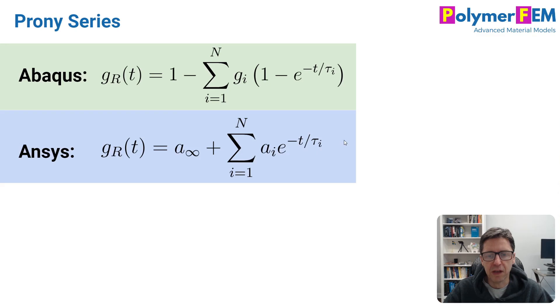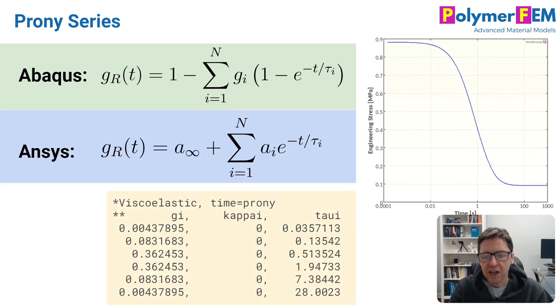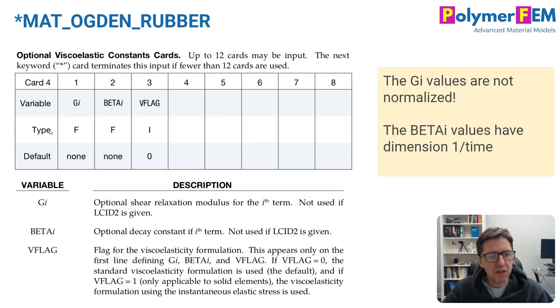Here's the Abaqus and the Ansys Mechanical definition of it. But the Ogden model in LS Dyna is a little different in that it specifies these parameters up to 12 prony parameters specifically.